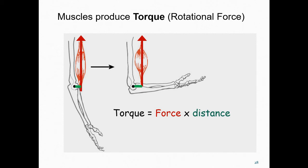This has important biomechanical consequences. Given our equation, if we have the same muscle force in both joint positions, we will be able to generate far greater torque when the arm is more flexed and the distance illustrated with the green line is greater. This distance is referred to as a moment arm.